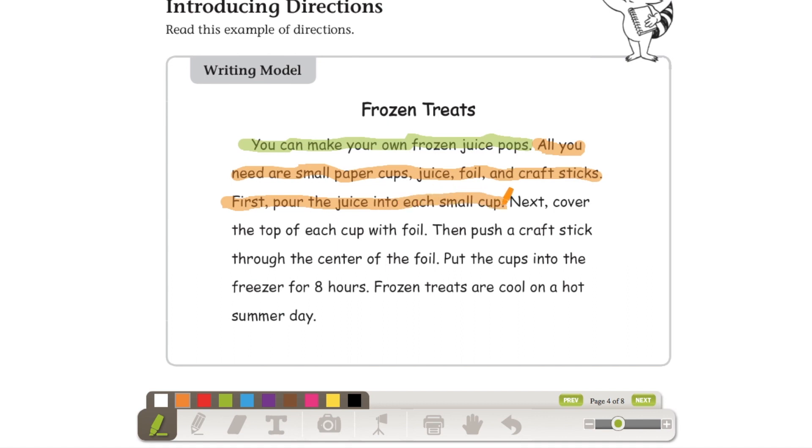And then we're going to do our first detail direction. First, pour the juice into each small cup. Okay, first step done. Next, cover the top of each cup with foil. Now just make sure you notice that it doesn't just say cover the top. Cover the top of what? Cover the top of each cup. Cover it with what? With foil.